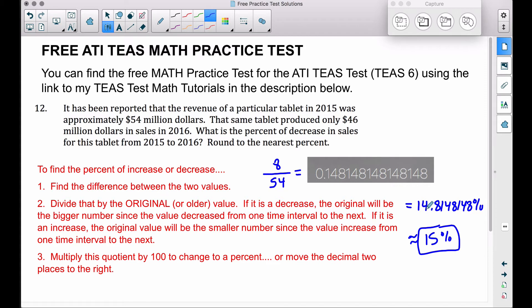So 14.8 percent is pretty much going to be 15 when we round to the nearest percent. The 8 tells the 4 to bump on up to the next number, and that is going to be our percent of decrease—it decreased by 15%.